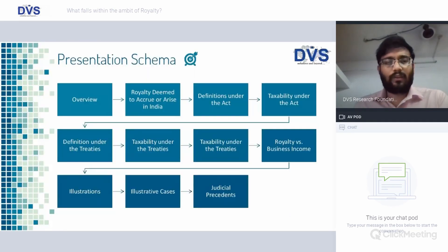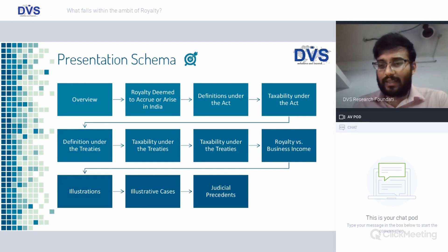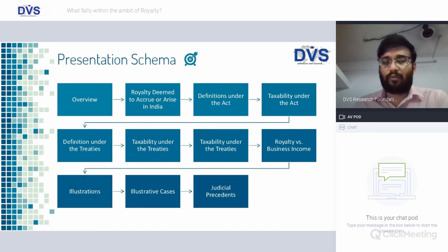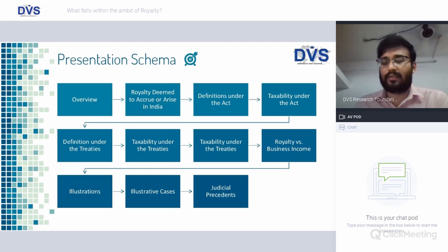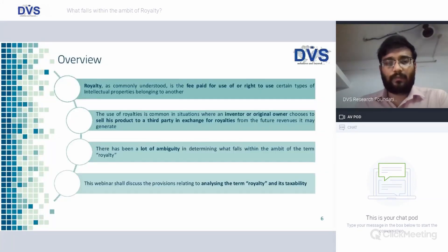The legends used are pretty similar to what we have seen earlier — MTC stands for Model Tax Convention. The presentation schema covers: overview, royalty deemed to accrue or arise in India, definition under the Act, taxability under the Act and under the treaty, the exact meaning of royalty, royalty versus business income, illustrations, illustrative cases, and judicial precedents.